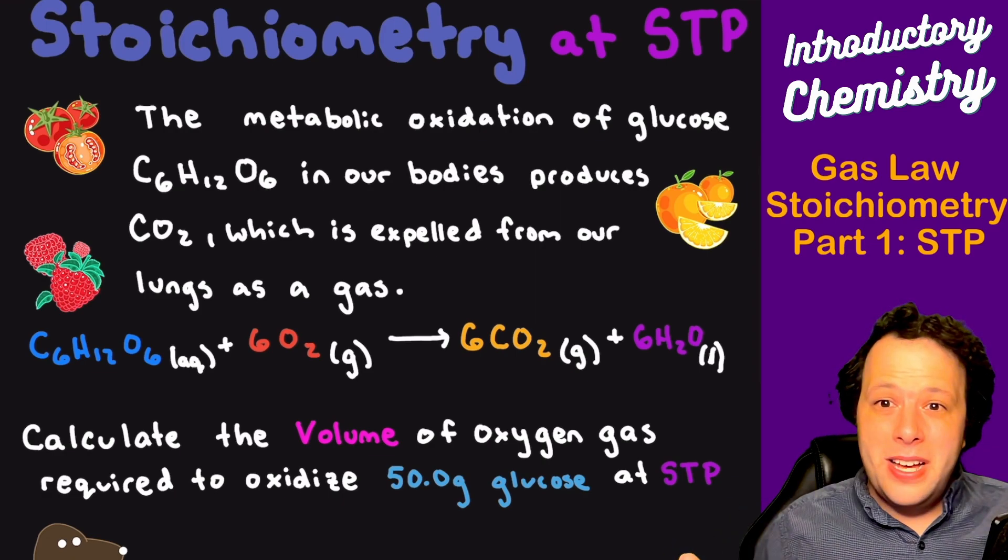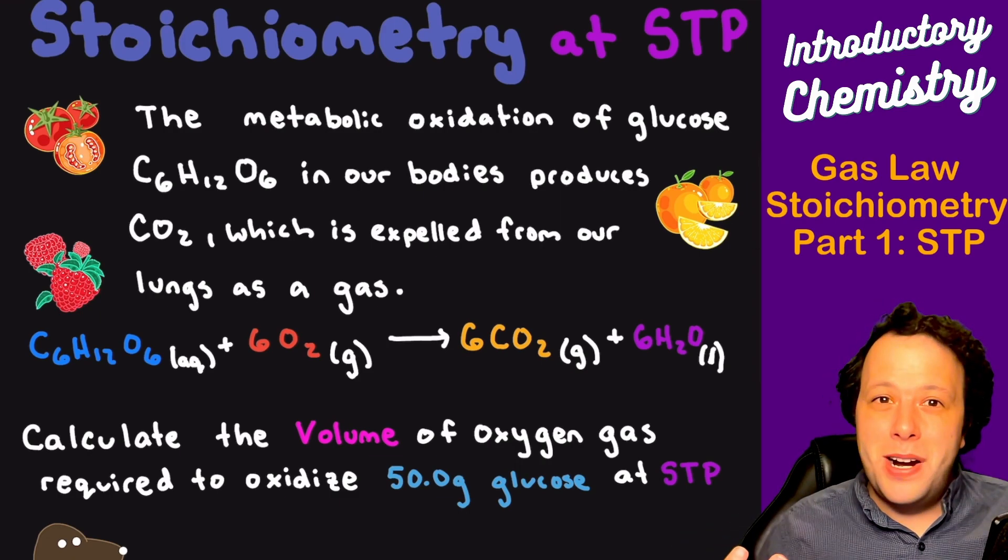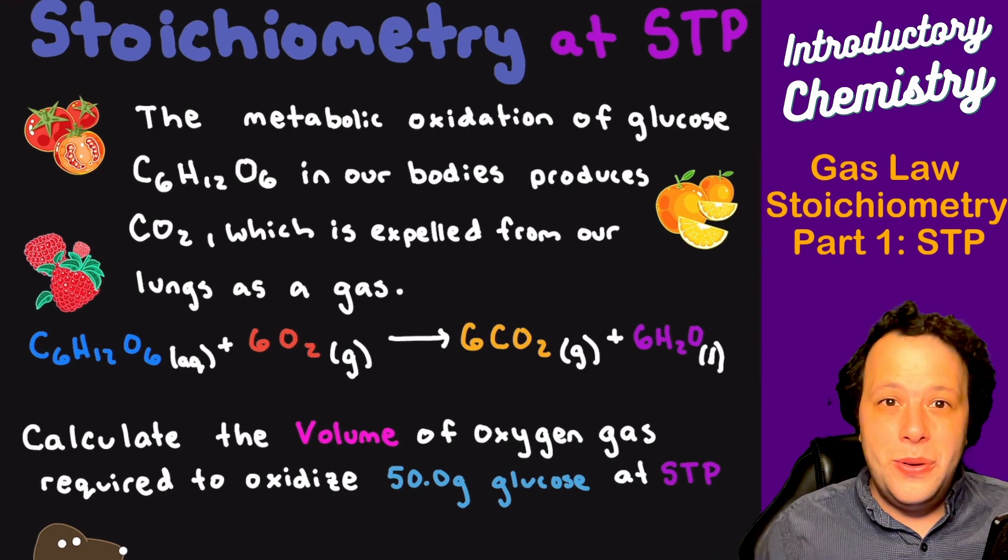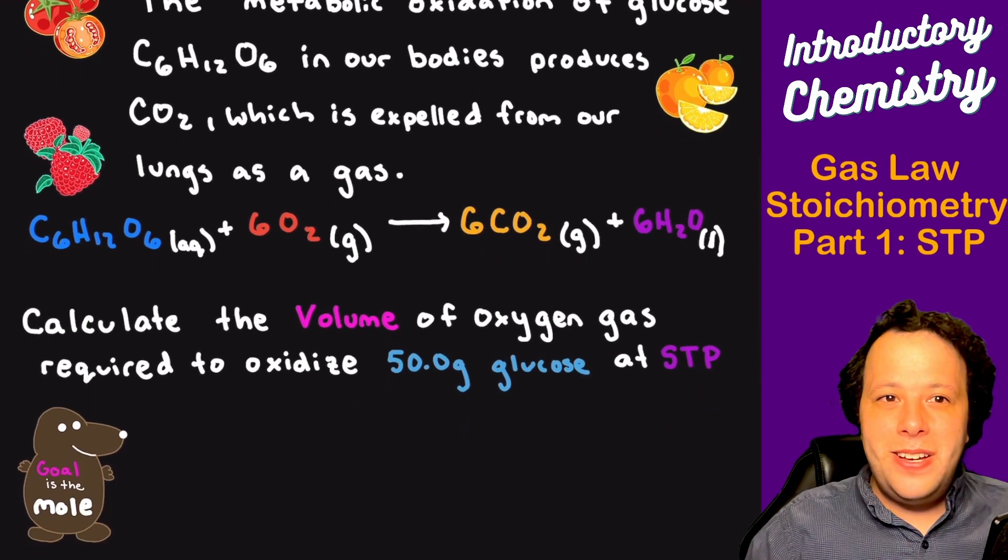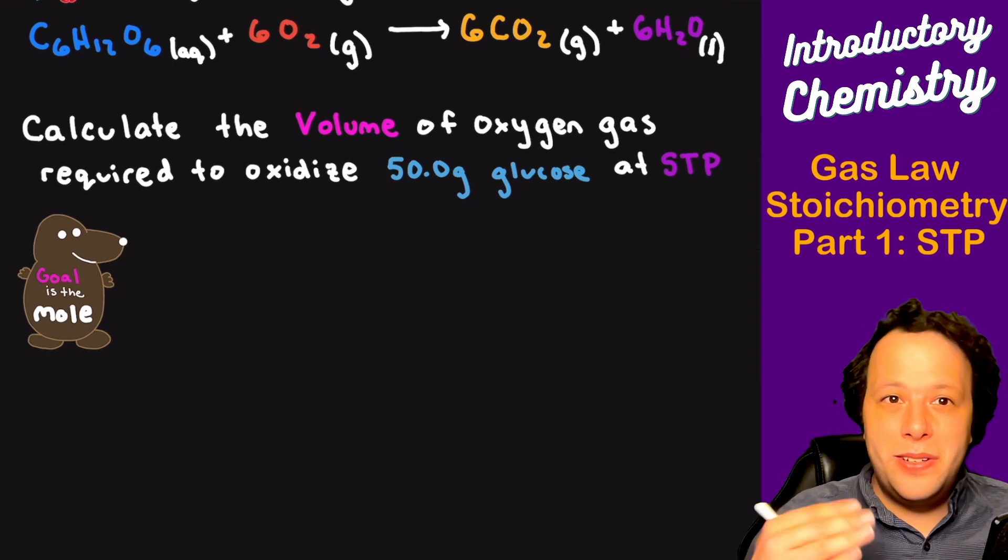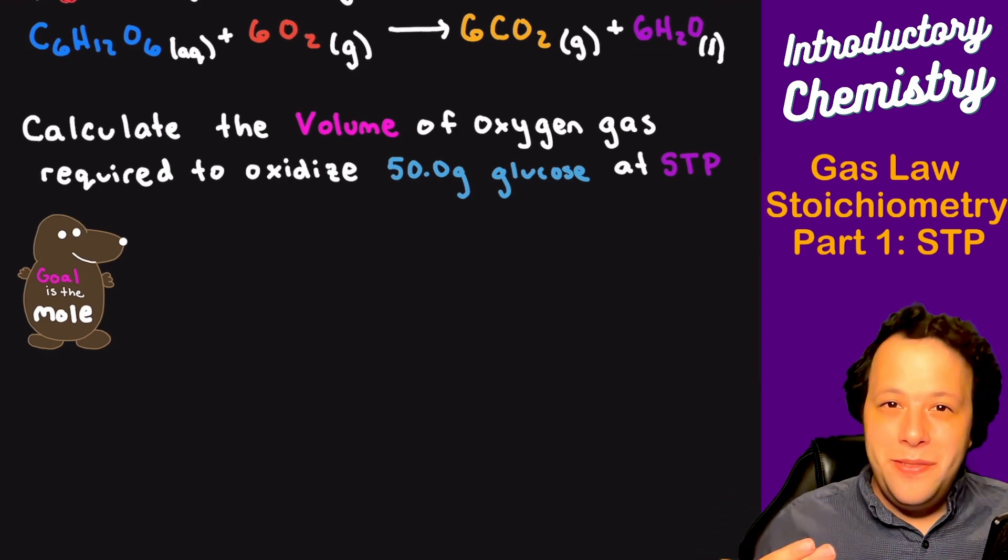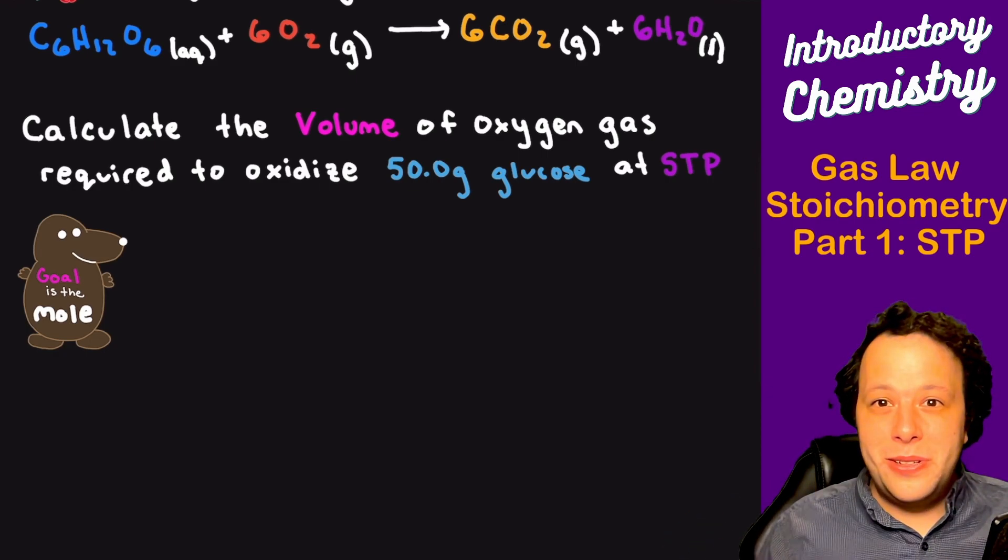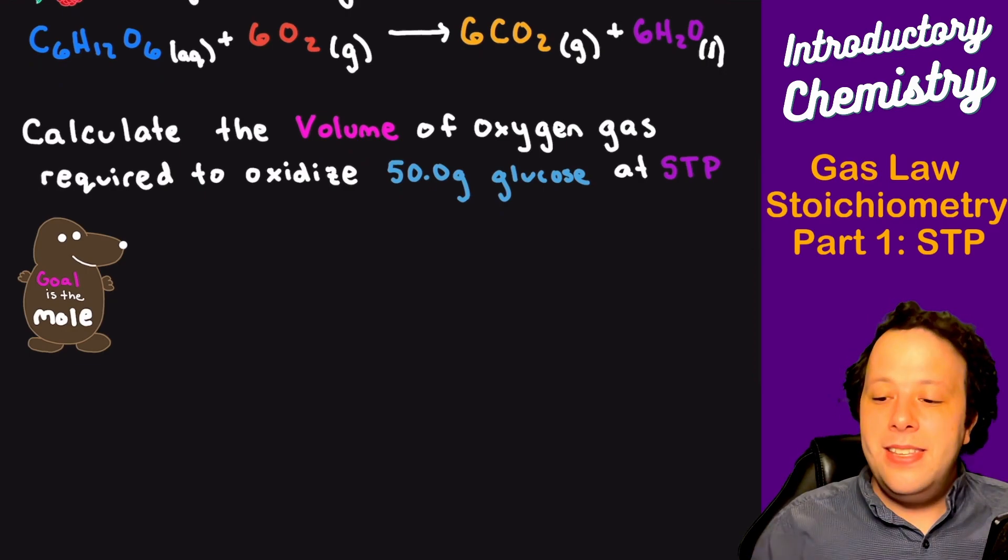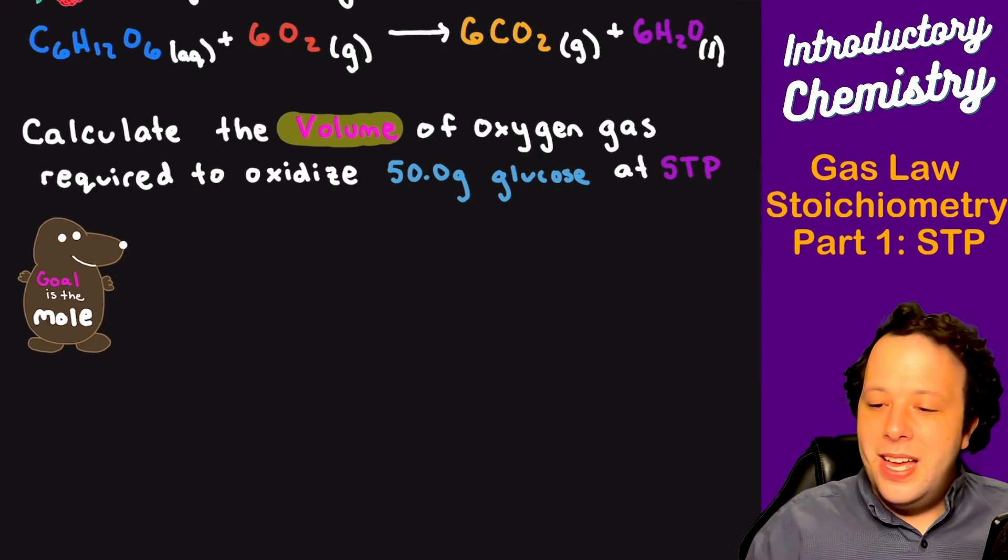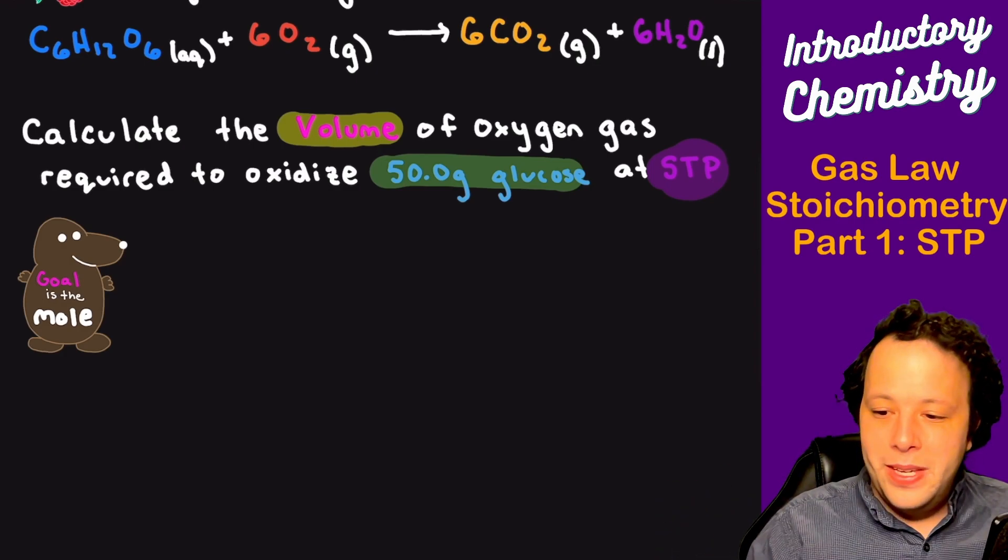Let's look at another stoichiometry at STP. If you have a chemical equation, you generally will have to do some stoichiometry, meaning we're going to have to use the mole-to-mole ratio very often. With this problem, the metabolic oxidation of glucose C6H12O6 in our bodies produces CO2, which is expelled through our lungs as a gas. You breathe out. If I have the following chemical formula, which is C6H12O6 glucose combining with oxygen to make CO2 and water, calculate the volume of oxygen required to oxidize 50 grams of glucose at STP. That was a lot of information, but it all really boils down to just knowing the chemical equation and this last line. So what do we need? We want the volume, and we started with 50 grams of glucose, and that's at STP, which is very crucial.